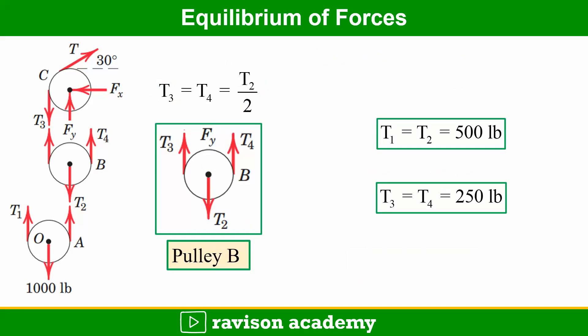For pulley B, the free body diagram is drawn, and from the free body diagram T3 is equal to T4. We already know T1 is equal to T2, which is 500 pounds, and T3 is equal to T4, that is 250 pounds.